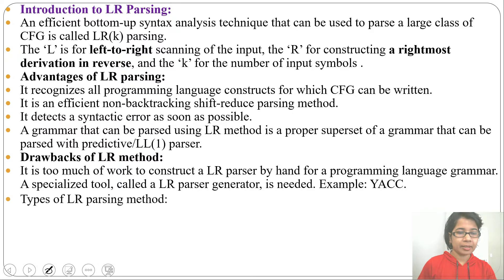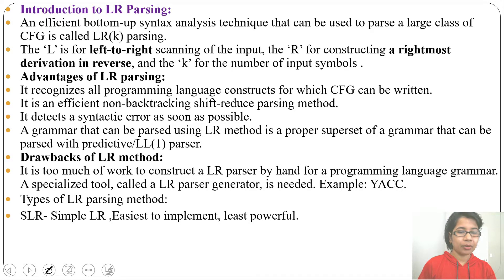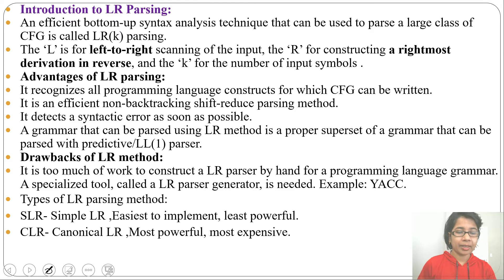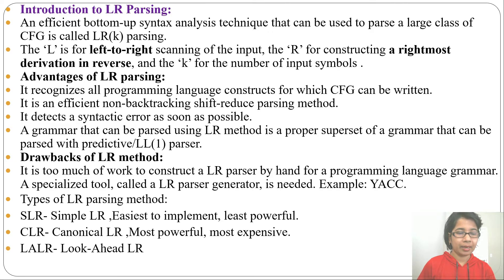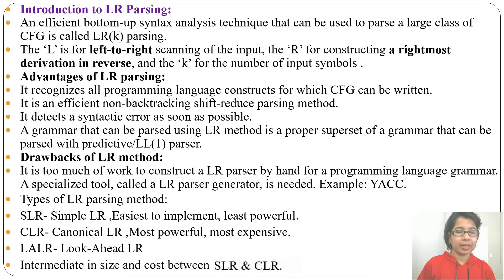Types of LR parsing methods: first is SLR, or Simple LR — it is the easiest and least powerful. Then CLR, or Canonical LR — it is the most powerful and most expensive. Then LALR, or Look-Ahead LR — it is intermediate in size and cost, having less power than CLR but more power than SLR. So CLR is most powerful and SLR is least powerful.